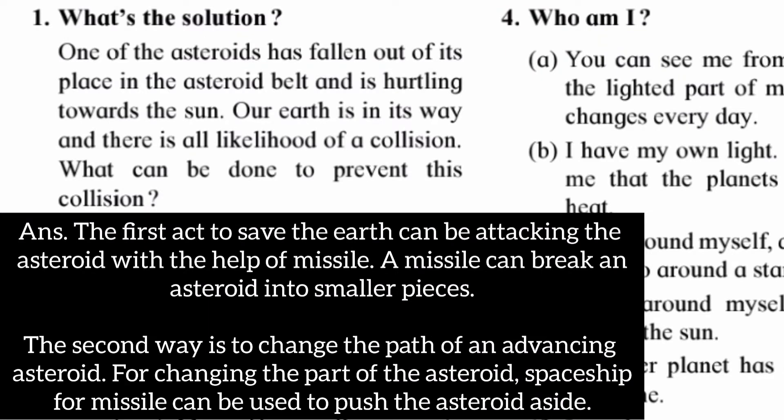Question number one: One of the asteroids has fallen out of its place in the asteroid belt and is hurtling towards the sun. Our earth is in its way and there is a likelihood of a collision. What can be done to prevent this collision?